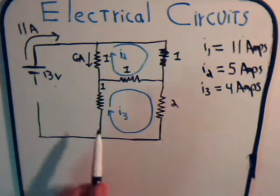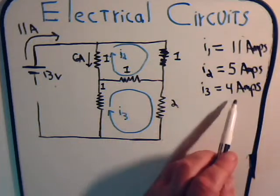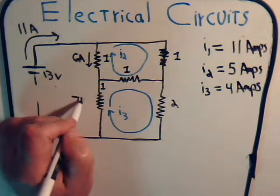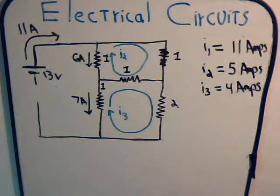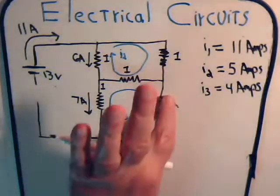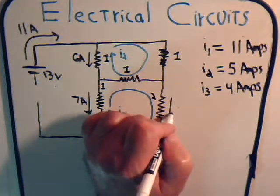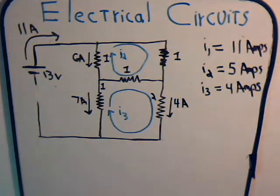And here for this resistor: 11 amps minus 4, that is 7 amps going in this direction. And for this resistor here, it's going to be 4 amps in that direction.